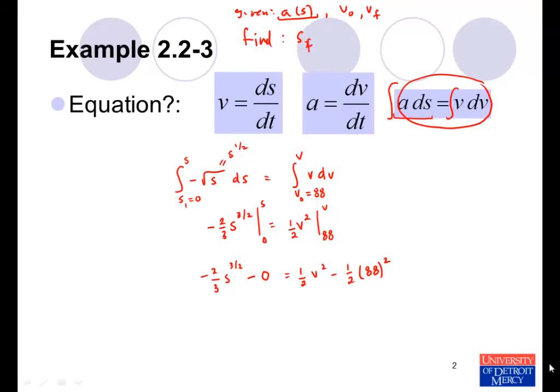Then we solve for S, which is ultimately what we want to find. In order to isolate S from the left-hand side, first we need to remove this coefficient, so we multiply by negative 3 over 2. Do that on the left and the right. We can factor out this one-half, left with V squared minus 88 squared. In order to get rid of this exponent, 3 over 2, we need to raise both sides to the reciprocal, 2 over 3.